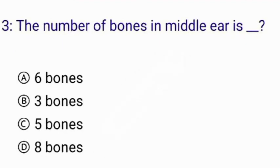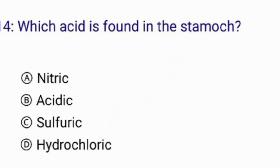The number of bones in the middle ear is — the correct answer is option B: three bones. Which acid is found in the stomach? The correct answer is option D: hydrochloric acid.